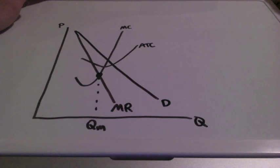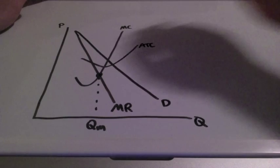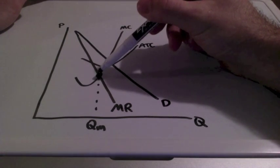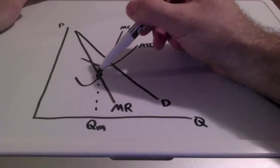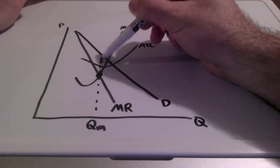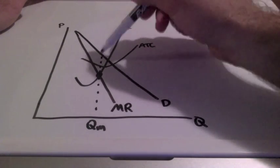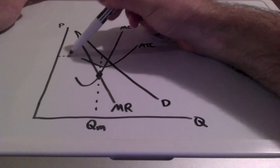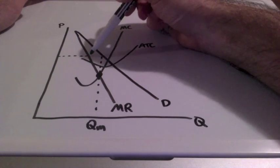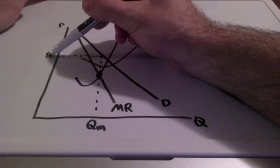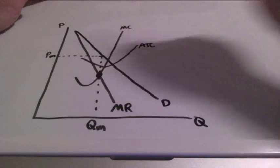Now what about the price? The price is going to be located on the firm's demand curve. We find where marginal revenue equals marginal cost at this intersection, and we bring this up to where it touches the demand curve, then all the way over to price. This represents the price for the monopoly.